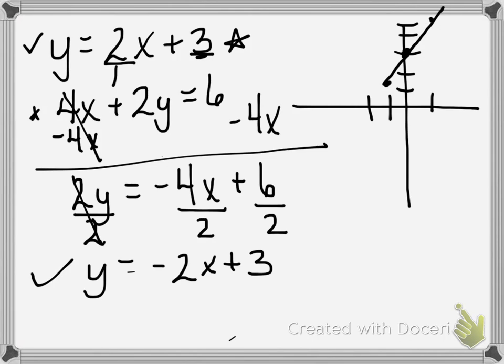Now looking to graph the other one, I'm still going to start at a positive 3, because my y-intercept on this equation is also a positive 3. But now my slope is down 2 over 1. So I'm going to go down 1, 2, over 1 in this direction.